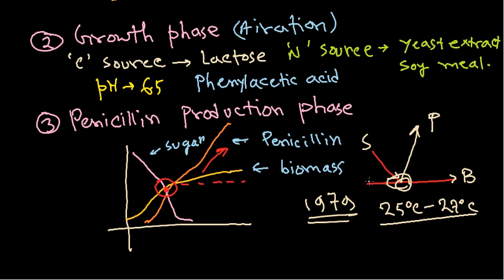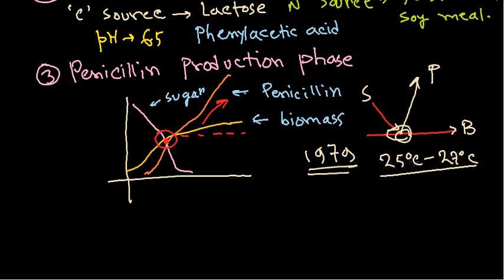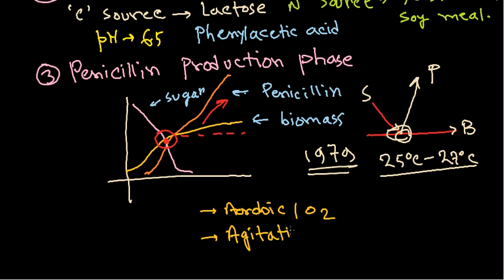From an industrial perspective, we need to choose the right fermenter. Keep in mind that this entire process is aerobic, so the fermenter must provide aeration, agitation, and oxygen. Because the mycelia are long and thick and tend to aggregate, people generally use submerged or liquid submerged fermentation.